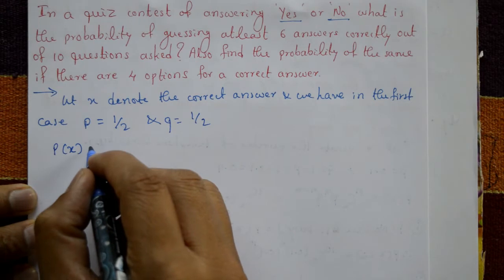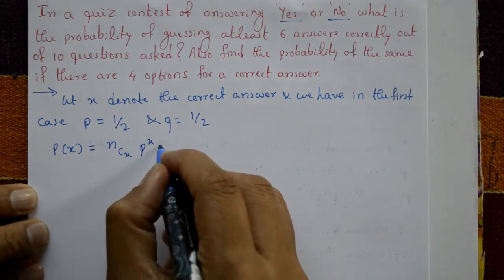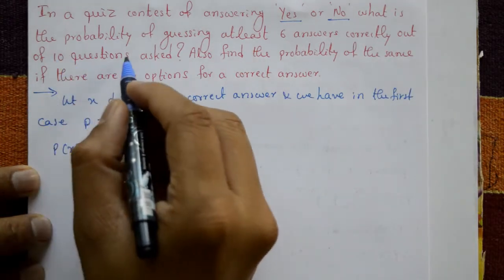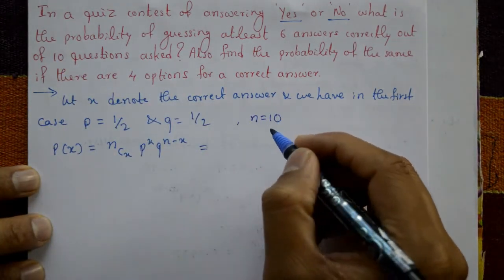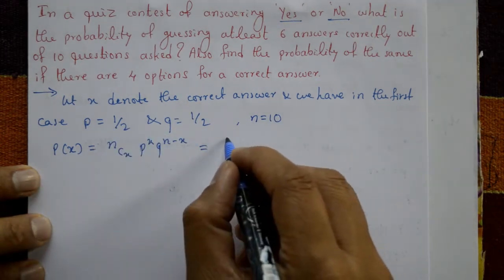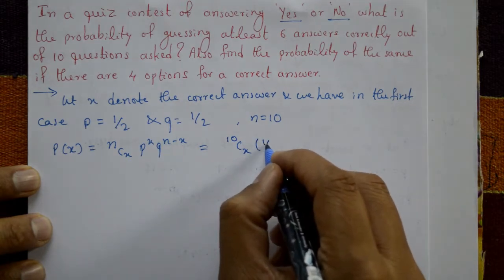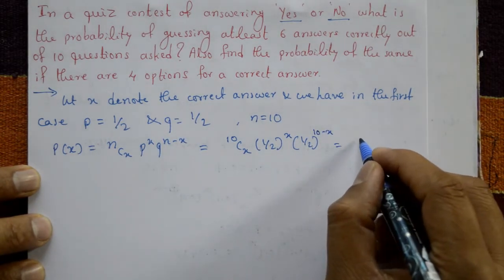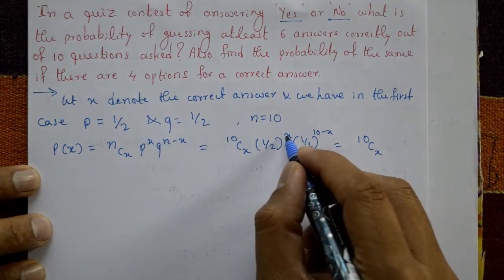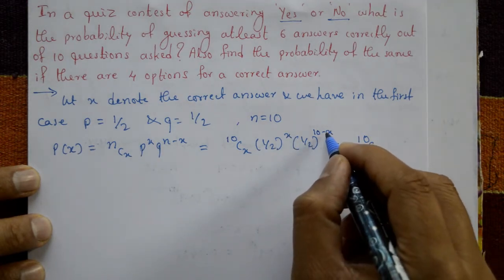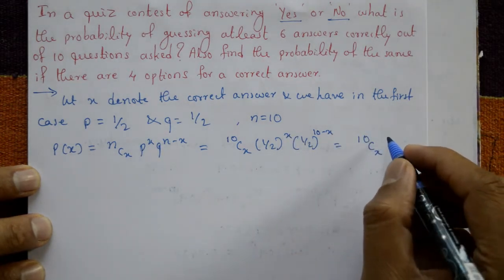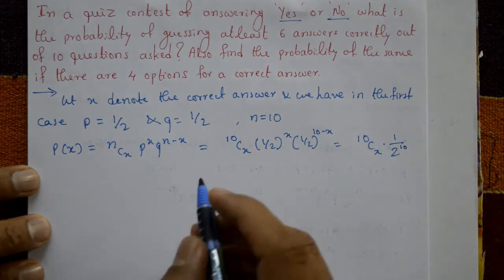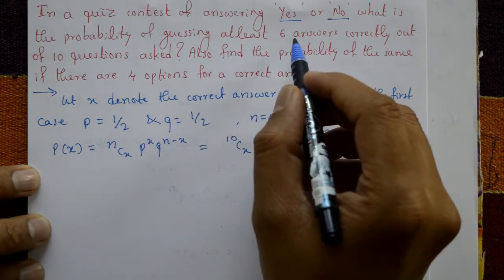Using the binomial distribution formula: P(X) = nCx · P^x · Q^(n−x). Here N = 10 questions, P = 1/2, Q = 1/2. So P(X) = 10Cx · (1/2)^x · (1/2)^(10−x), which simplifies to 10Cx · (1/2)^10.